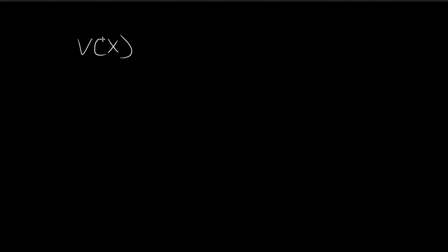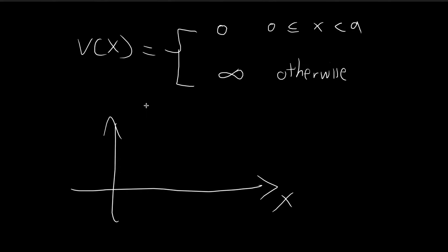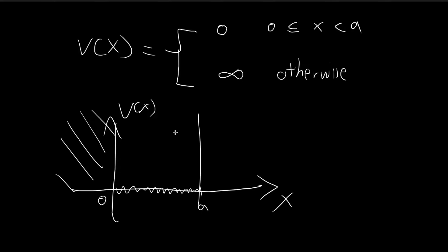In this video, we're going to uncover some of the properties of the infinite square well. The infinite square well corresponds to a potential equal to 0 when x is between 0 and a, and equal to infinity everywhere else. You can visualize this by drawing a graph of V(x): between 0 and a the potential is 0, and everywhere else the potential is infinity.